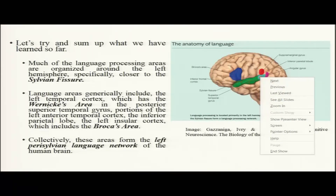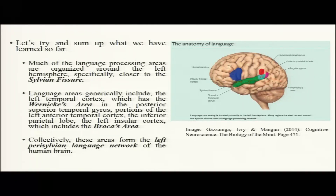Much of the language processing areas are organized around the Sylvian fissure. Language areas generally include the left temporal cortex — which has Wernicke's area and the posterior temporal gyrus — the left anterior temporal cortex, the inferior parietal lobule, and the left frontal cortex which includes Broca's area. Collectively, all of these regions are supposed to construct what is called the left perisylvian language network — the set of areas involved in understanding or producing language.